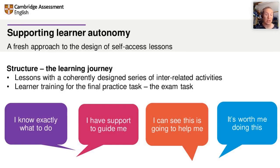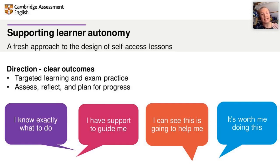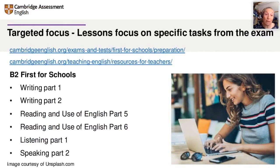We're offering learners learner training. In the poll, we agreed that one of the problems was that there was more practice and not sufficient training or teaching. Our new self-access lessons have a clear direction with clear outcomes — targeted learning with exam practice — and an opportunity for learners to assess, reflect, and plan for progress. Because lessons don't exist in isolation: what we do impacts on what we do in the next lesson and in planning ahead.